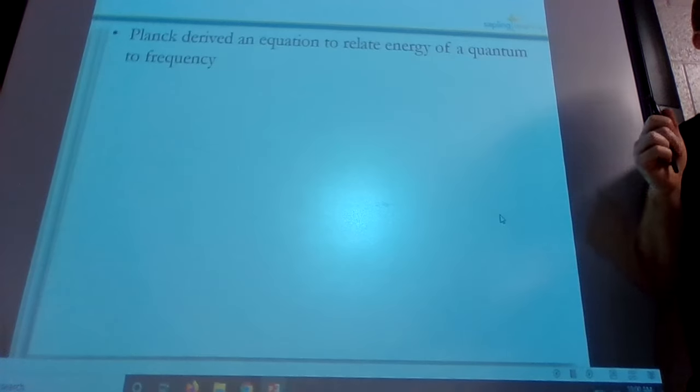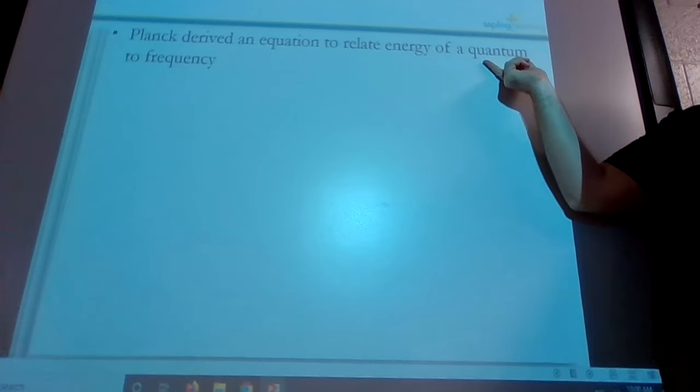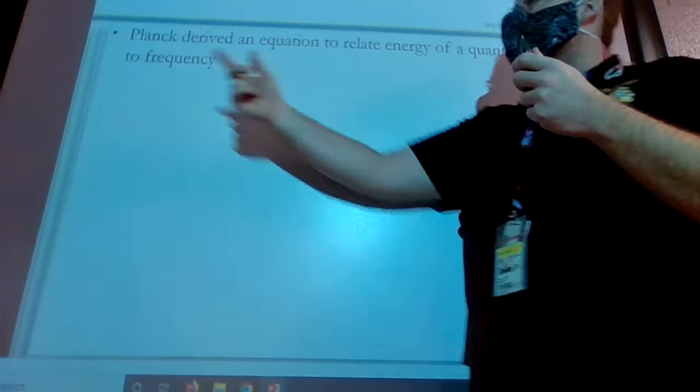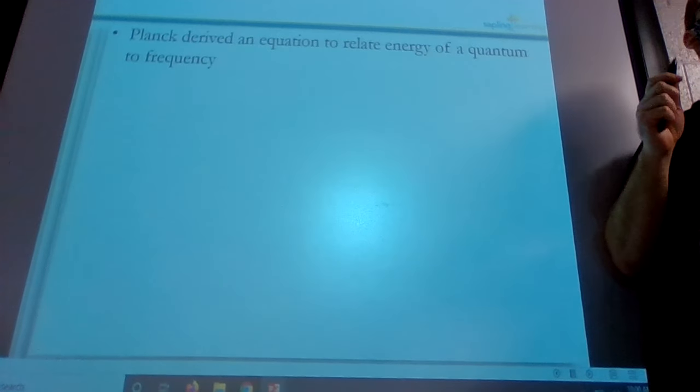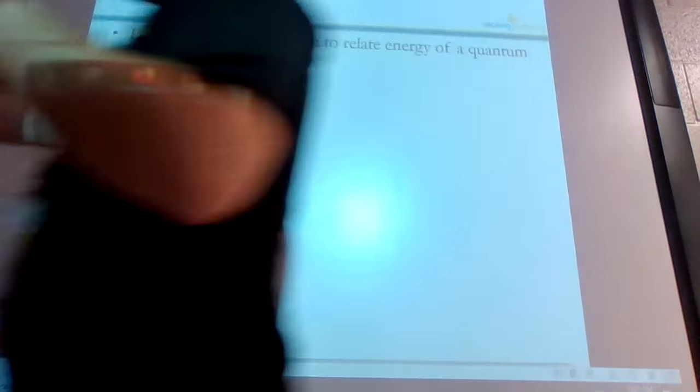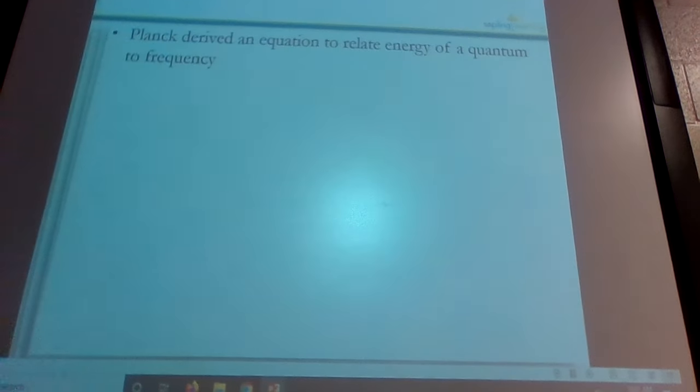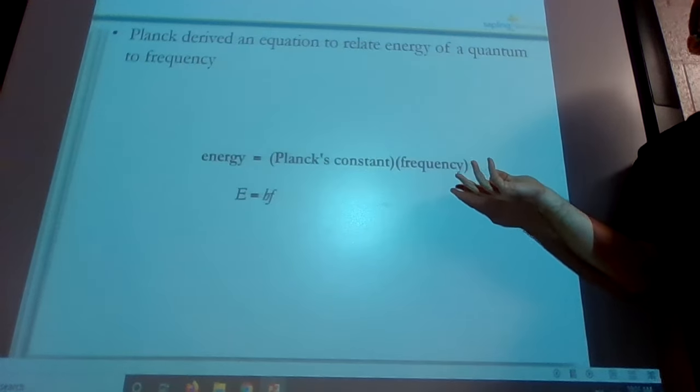When we talk about light, individual quanta are called photons. So Planck derived an equation to relate energy of a quantum to a frequency. So he figures out the relationship between that little energy packet and what the frequency is. And we already talked about frequency yesterday. That's the fancy little F over here in this formula. The speed of light is equal to frequency times wavelength. Now he's going to introduce quantum energy into it.